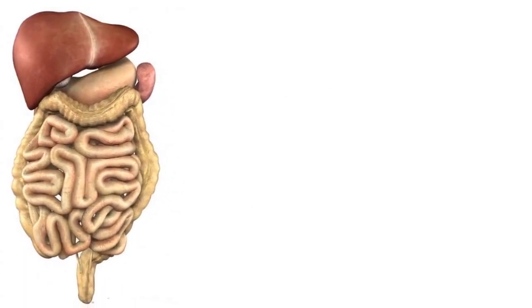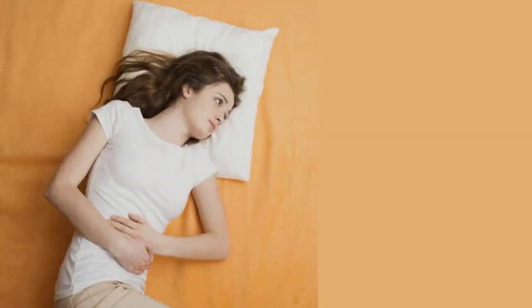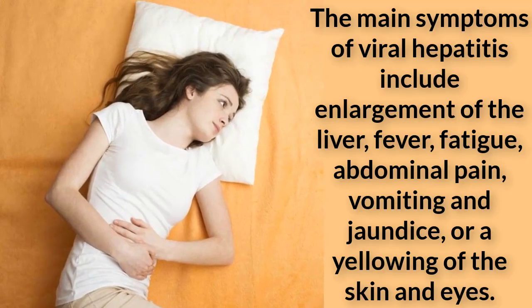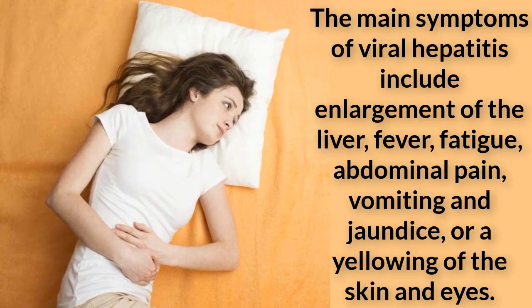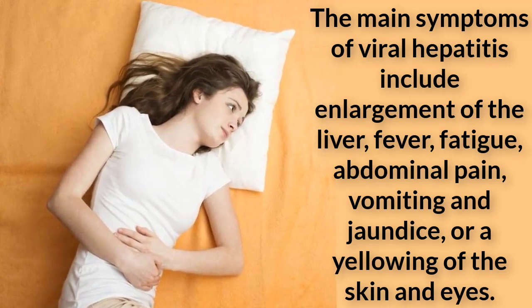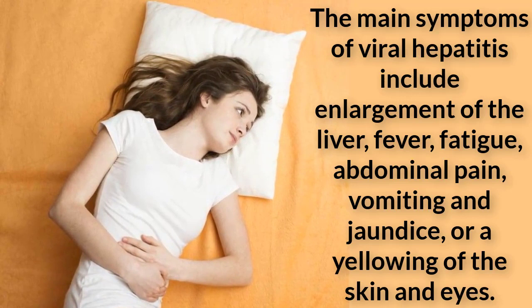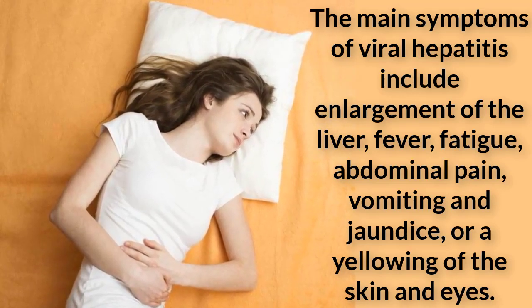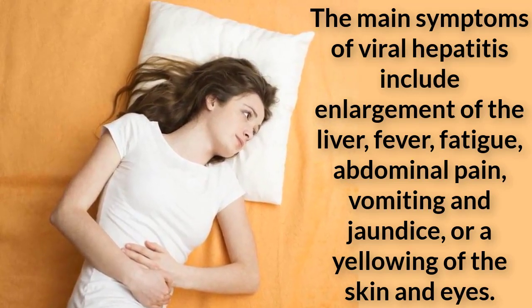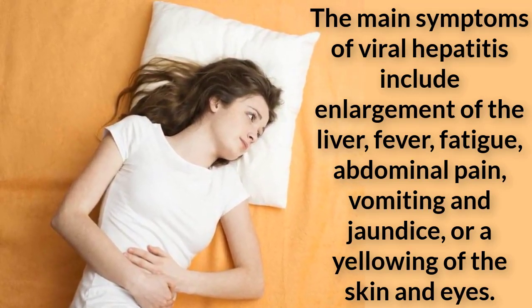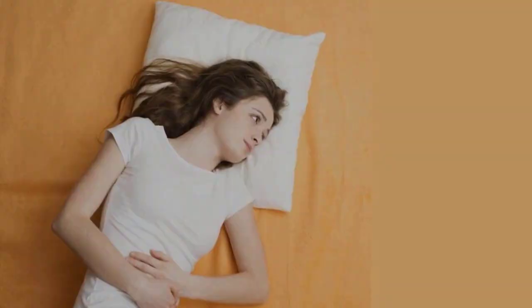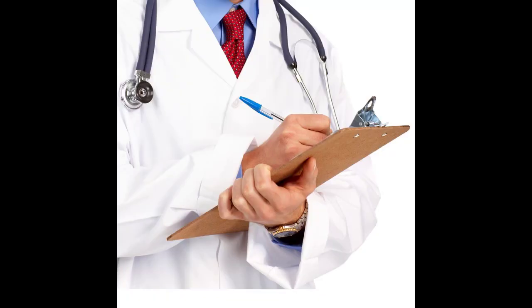The main symptoms of viral hepatitis include enlargement of the liver, fever, fatigue, abdominal pain, vomiting, and jaundice, or a yellowing of the skin and eyes. In children with acute viral hepatitis, the hepatomegaly eventually resolves and the liver returns to its normal size. Children with chronic hepatitis will continue to have enlargement of the liver until the disease becomes so severe that the liver atrophies and starts to shrink.